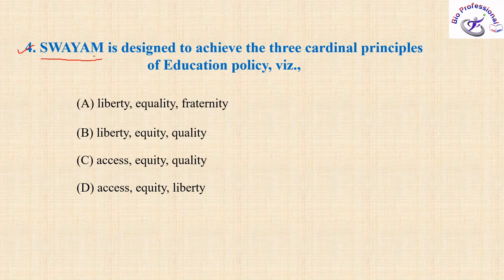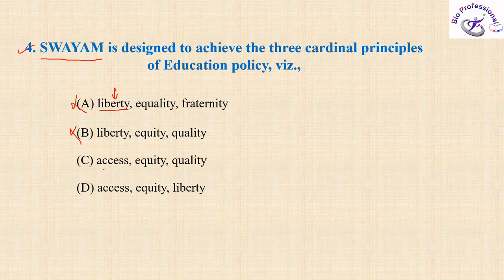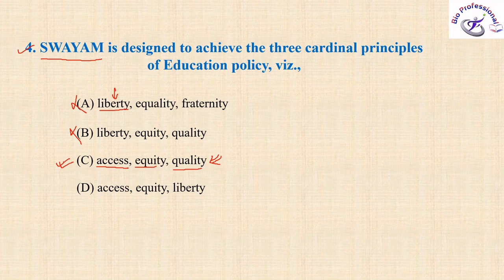SWAYAM is designed to achieve the three coordinate principles of education policy. It is a program initiated by the Government of India; the objective is to take the best teaching and learning resources to all. Looking at the options: 'liberty' means freedom so that option cannot be correct. 'Access' is correct since SWAYAM is an online platform. 'Equity' is also correct, and 'quality' because they provide quality education to everyone. So option C — access, equity, and quality — is correct.